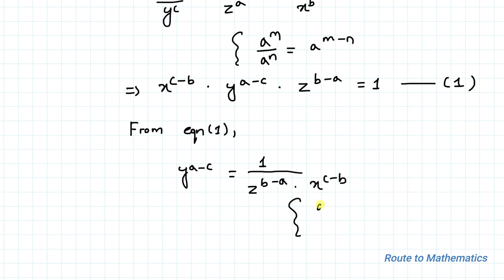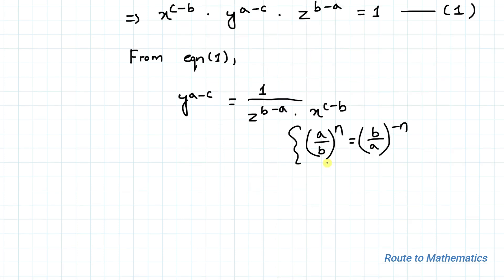We use the exponential rule: (a/b) to the power n equals (b/a) to the power minus n — that is, by doing the reciprocal the powers become negative. Using this rule, we can write y to the power (a minus c) equals z to the power (a minus b) multiplied with x to the power (b minus c). Here we have simply added a negative sign in the power after doing the reciprocal.